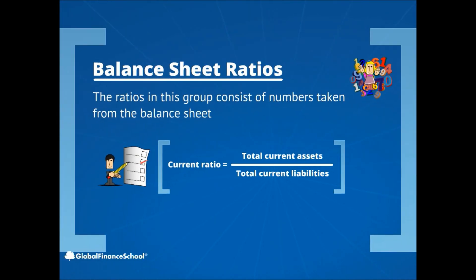Balance sheet ratios. The ratios in this group consist of numbers taken from the balance sheet. One of the popular ratios in this group is the current ratio. Current ratio equals total current assets divided by total current liabilities. This ratio's purpose is to evaluate a company's ability to pay its liabilities in the near future.